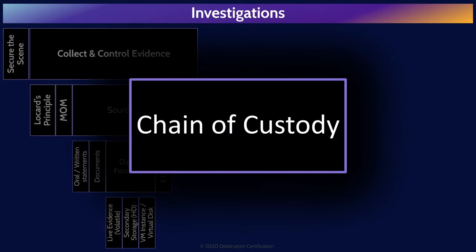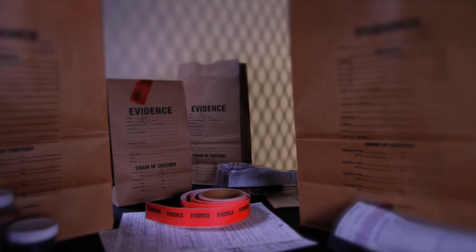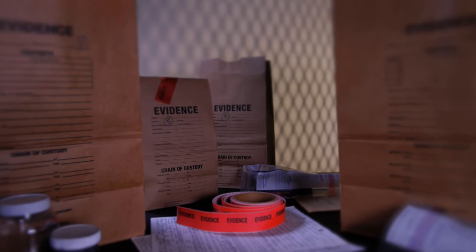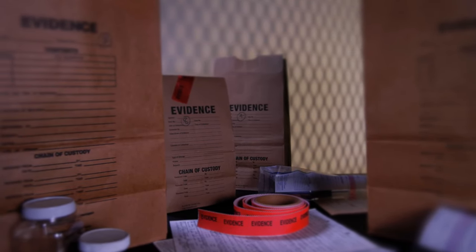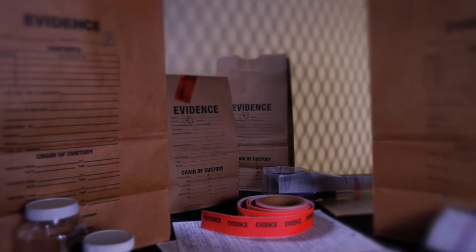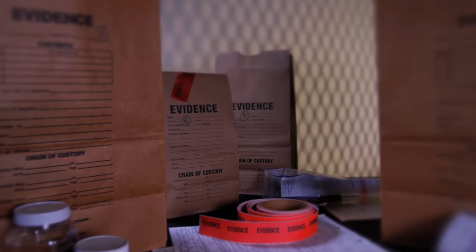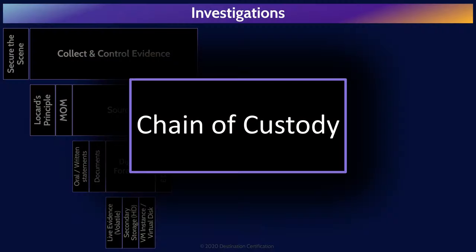This is an important one to remember — the chain of custody. You should associate the chain of custody with one word: control. The chain of custody is the process of documenting the complete journey of evidence during the life of the case, demonstrating that you had control of the evidence from the moment it was collected to potentially years later when it is presented in a court of law, and thus the evidence has integrity.